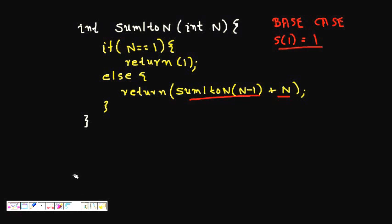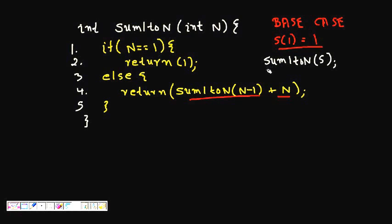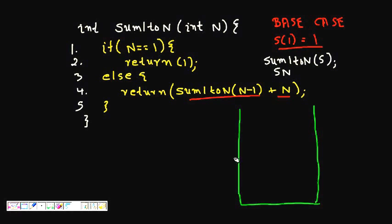Let's understand how recursive functions are tracked. We put line numbers on our code — lines 1 through 5. When a function is called, we push it onto the stack; when a function returns, we pop it from the stack.